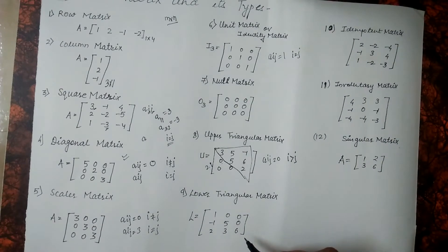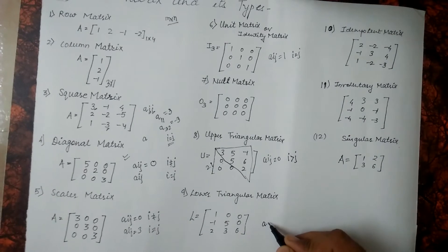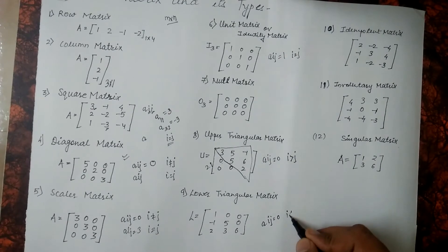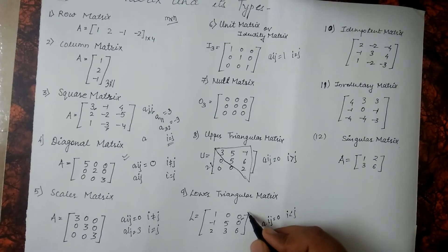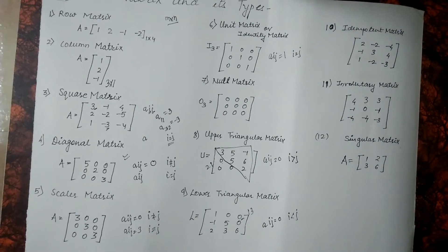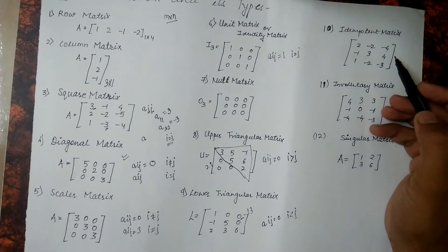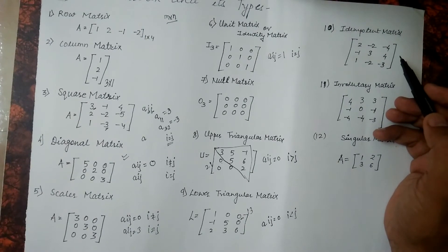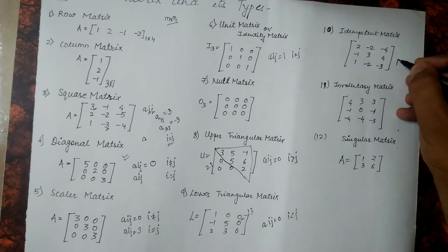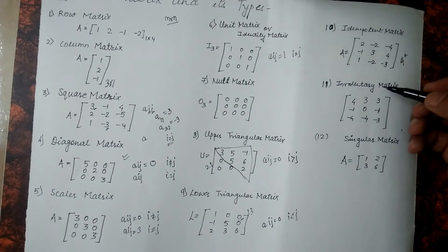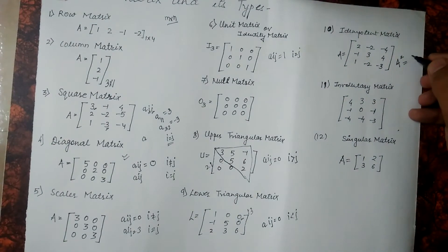Similarly we have the lower triangular matrix. In this matrix the condition is: a of ij is equal to 0 if i is less than j. See here, value of i is 1 and j is 3, so the value is 0. Now the next matrix which comes into picture is the idempotent matrix. The idempotent matrix is a special kind of matrix that has the property that A squared equals A — if we multiply this matrix by itself we get the product as A.